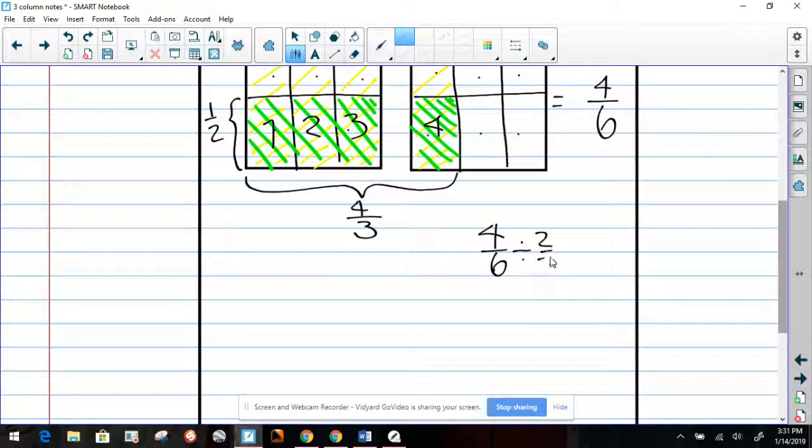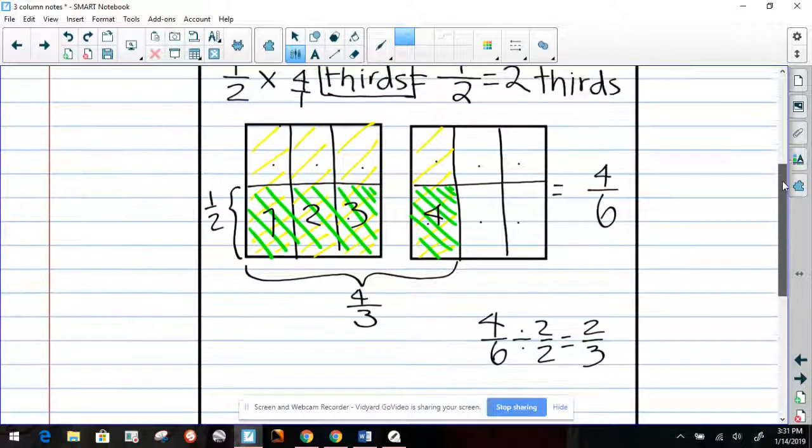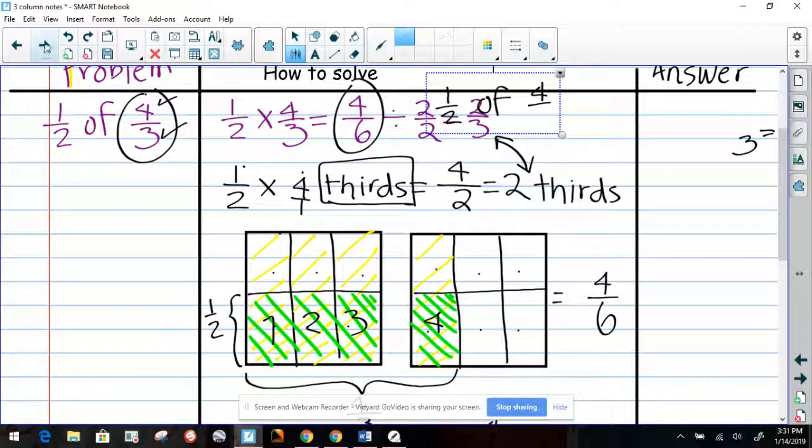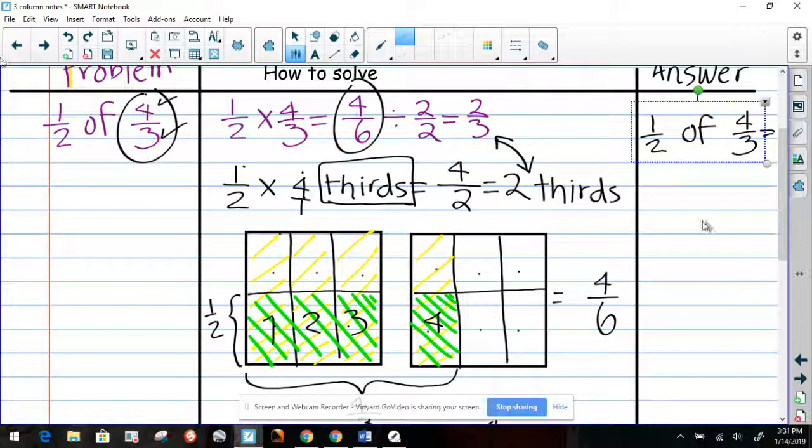So now we can say that we're going to write the answer. One half of four thirds equals—let me get that number back in shape here. One half of four thirds equals two thirds.